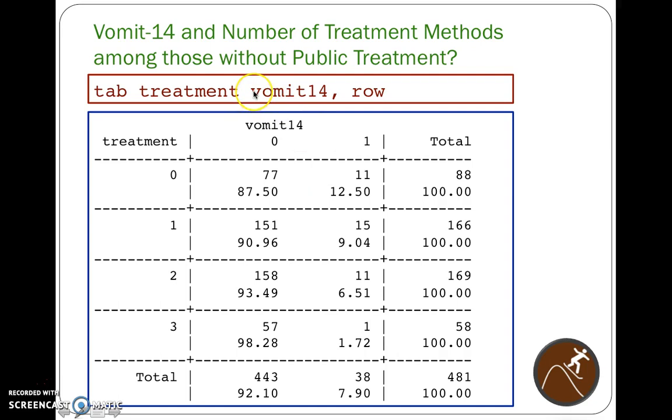And we may be interested in seeing the frequency of disease like vomiting in the previous 14 days of their interview and how many treatment methods they use at home. So these people use no treatment methods, and the percentage of them reporting vomiting was 12.5%. The percentage using one method was 9%, using two methods was 6.5%. Three or four methods, only 1.72%.